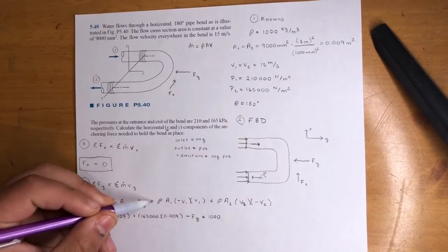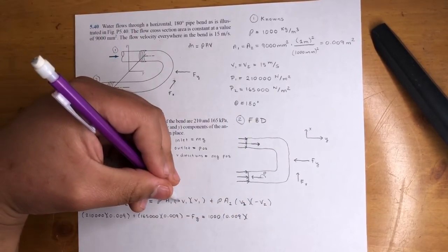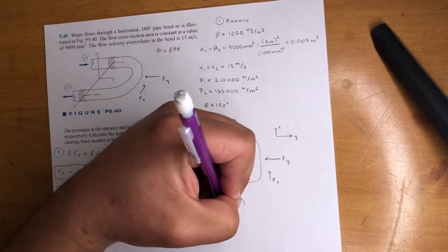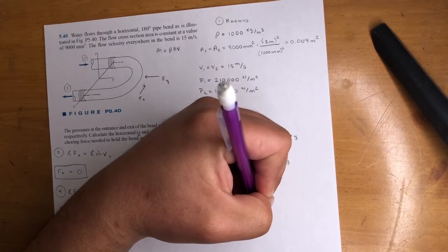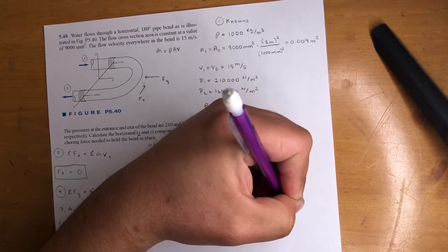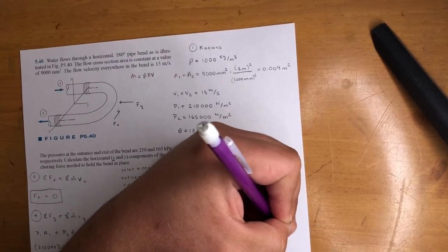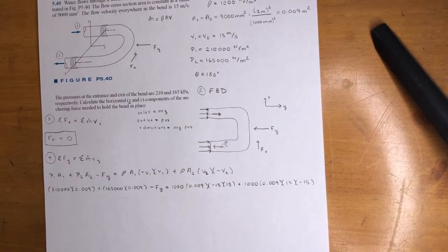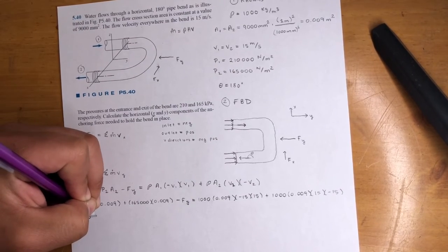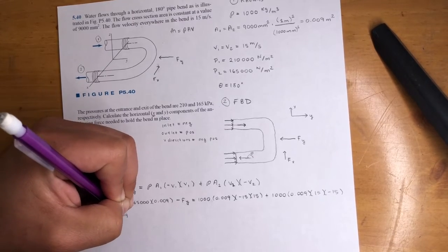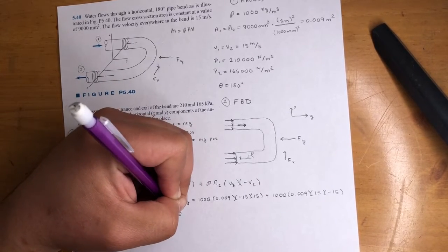This is 1,000 density, times area, negative V1. V1 is 15. Negative 15 times 15 again. Negative V1, V1. Plus, 1,000 times 0.009 times, cool. Now, this one is positive 15. This one is negative 15.